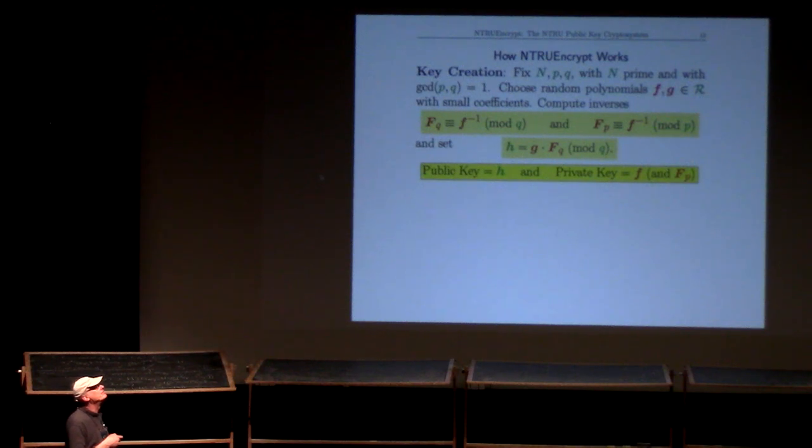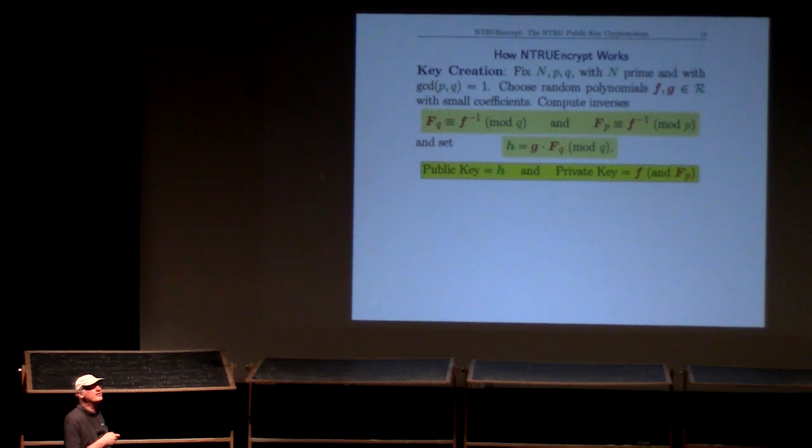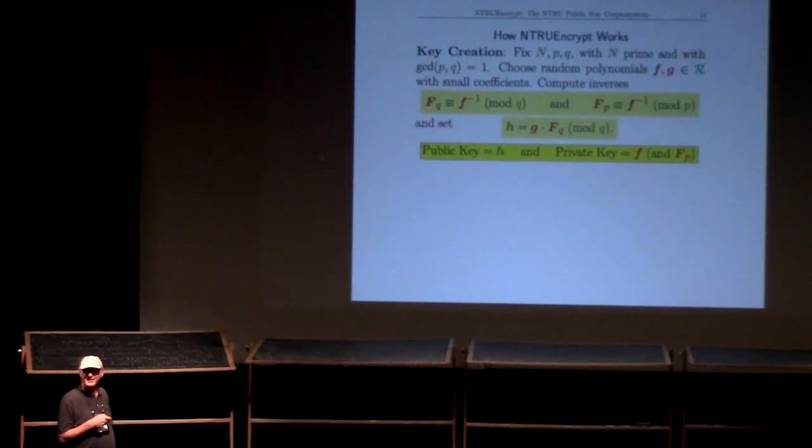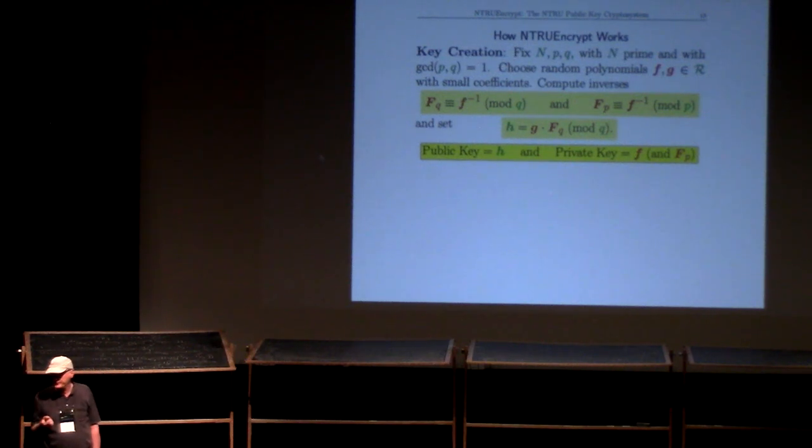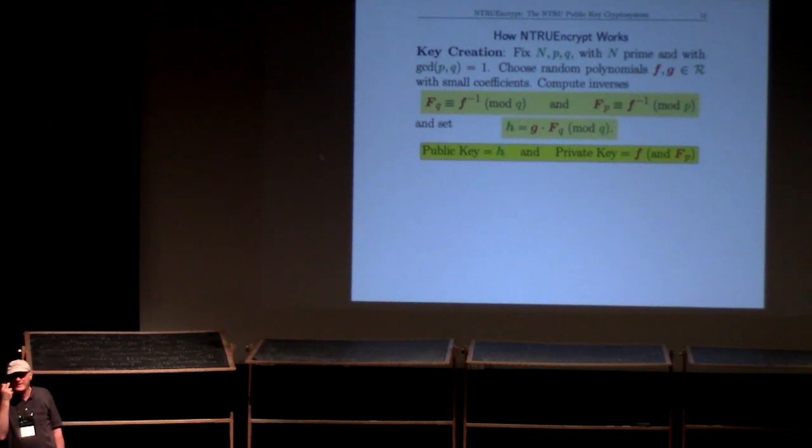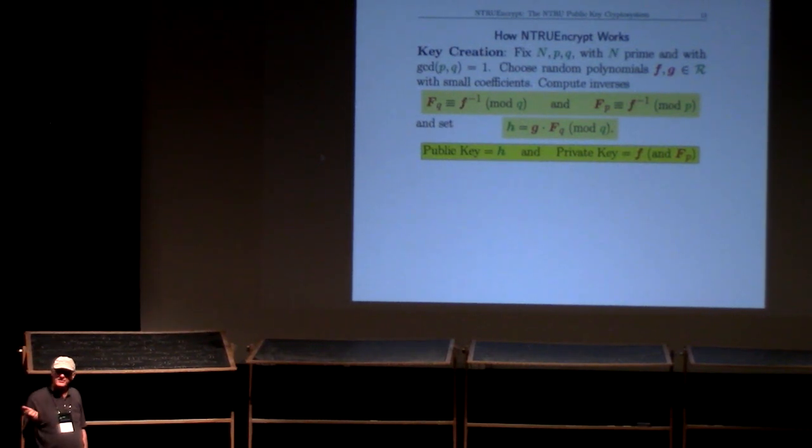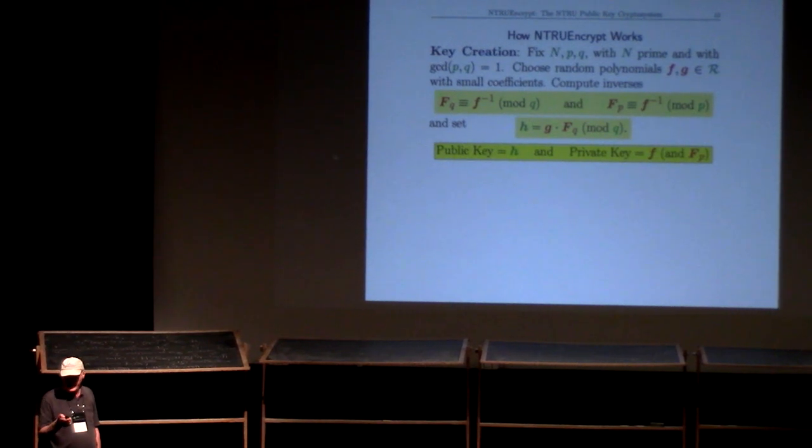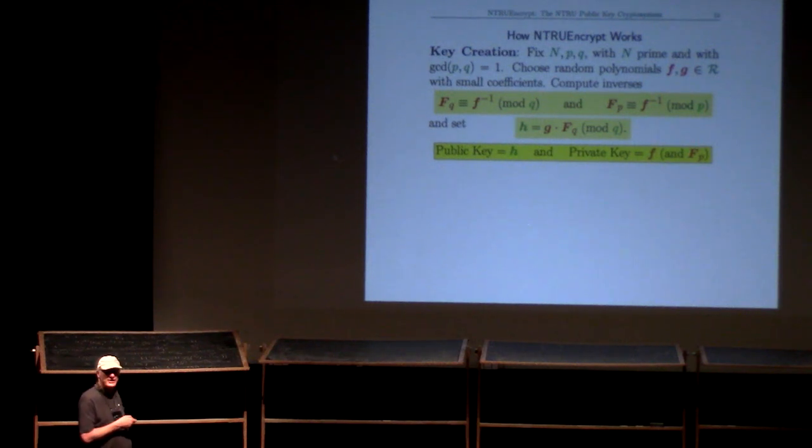P is normally either 2 or 3—often 3 is the most efficient. So it's tiny. And Q is a prime, usually roughly half the size of n, or maybe around the size of n, or maybe double the size of n, but somewhere in there. So also not very big.